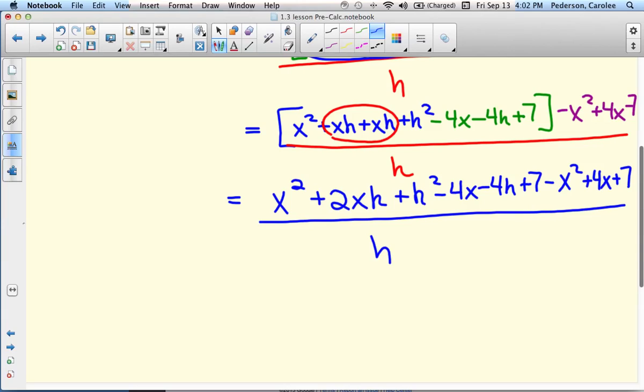Let's see if some things cancel now. Minus 4x plus 4x cancel. Minus x squared, x squared cancel. And this should be a minus 7. So that minus 7 and plus 7 cancel.